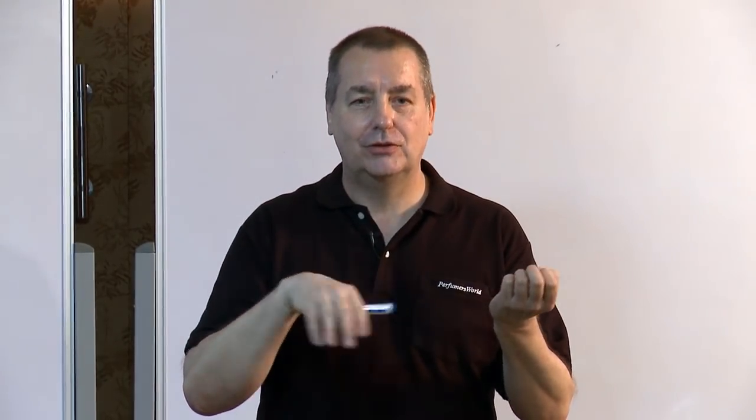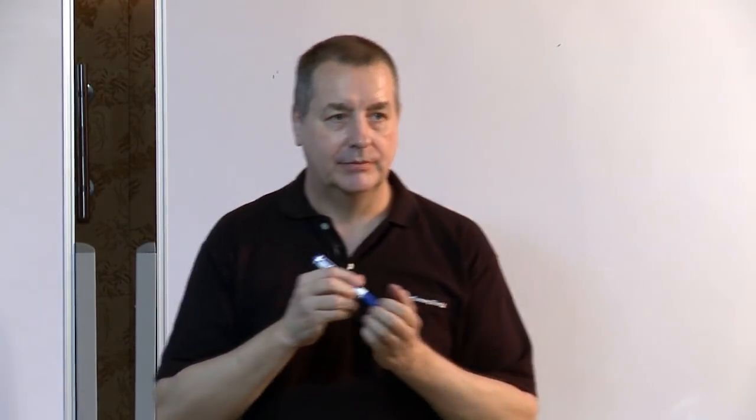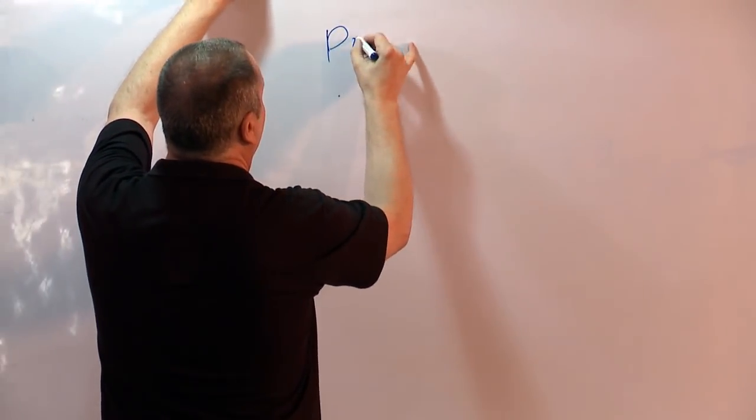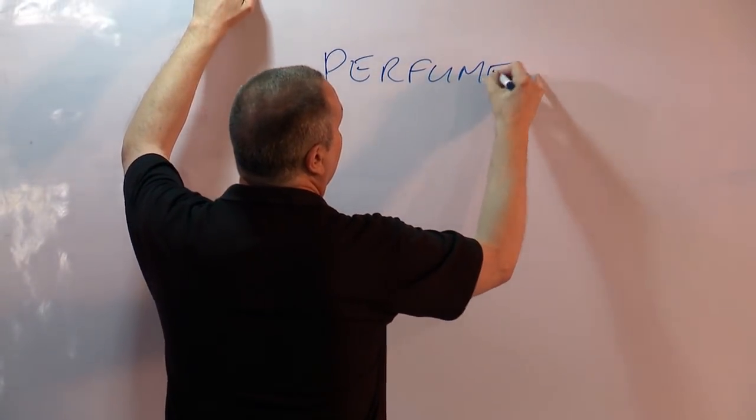Another possible answer to what is perfume concerns the ingredients. Most of this course will concentrate on perfume compound — the concentrate that goes into making a liquid perfume such as Chanel No. 5. Chanel No. 5 may have 35% of the concentrate, and the rest will be alcohol, colour, antioxidant, and UV absorber. We're going to concentrate on the compound, on the concentrate. So when I talk about perfume, I'm mostly talking about the perfume compound.